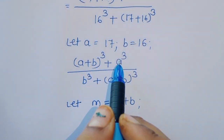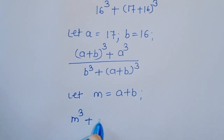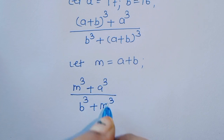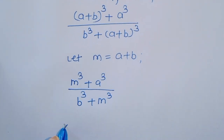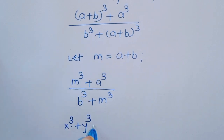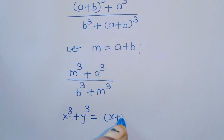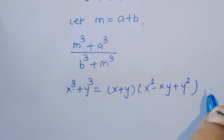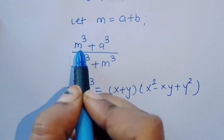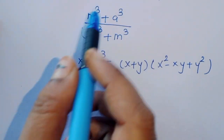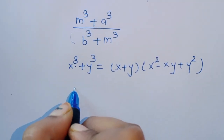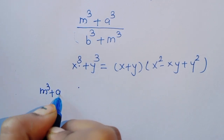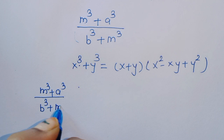So we can write this as M cube plus A cube divided by B cube plus M cube. We know the formula: X cube plus Y cube equals X plus Y times X square minus XY plus Y square. This is the formula for X cube plus Y cube, and we have the term M cube plus A cube. So applying this formula: M cube plus A cube divided by B cube plus M cube equals M plus A times M square minus MA plus A square, divided by B plus M times B square minus BM plus M square.